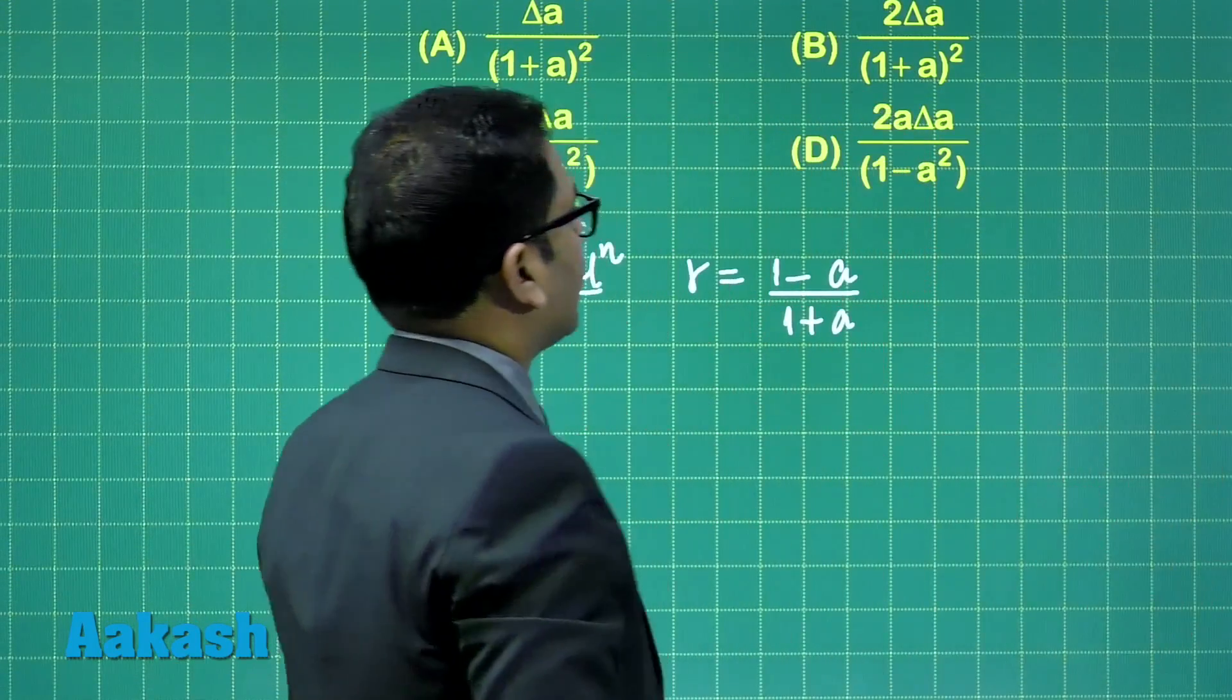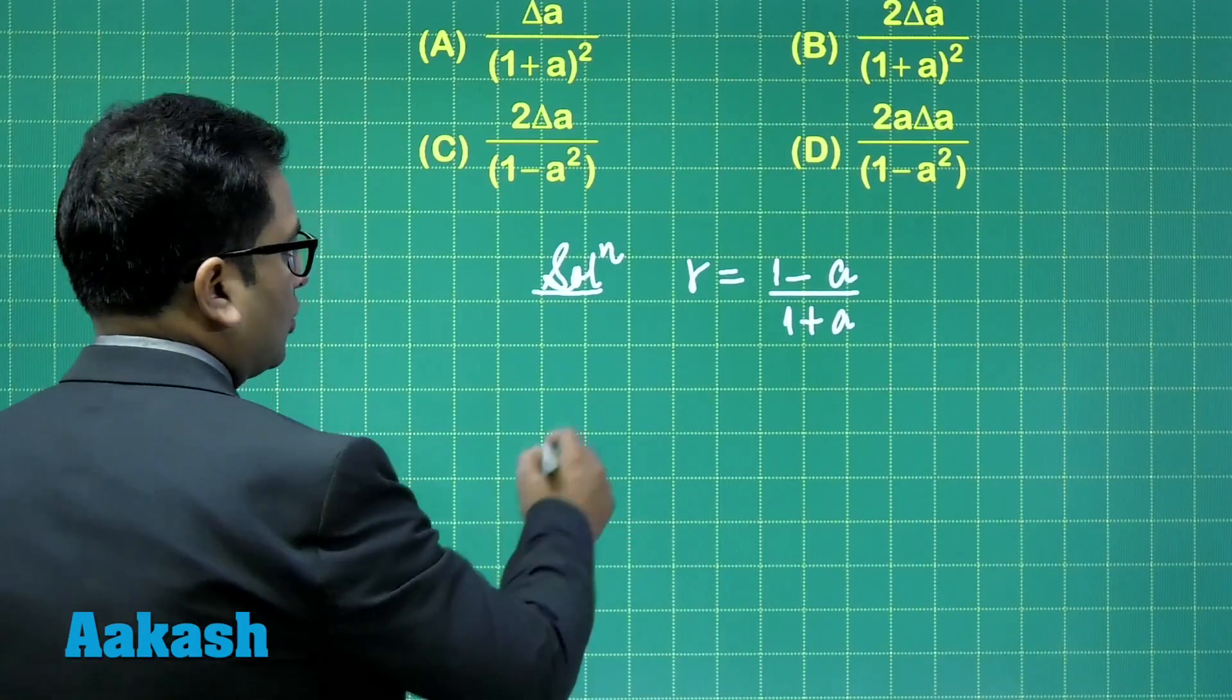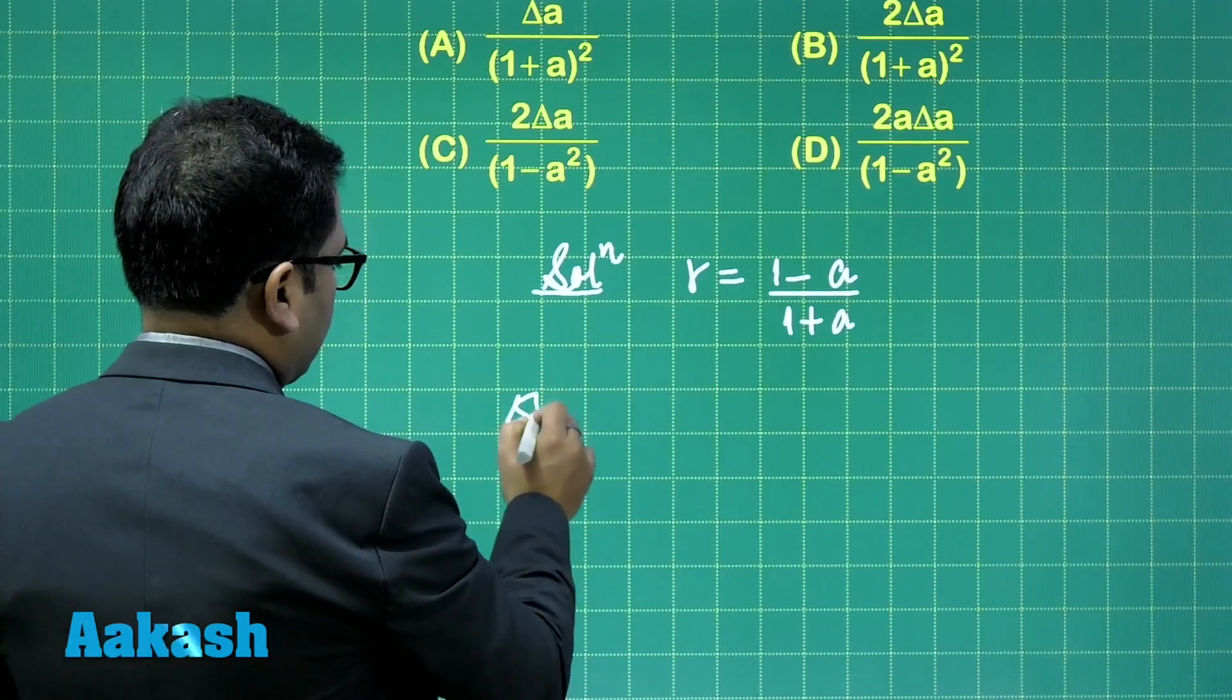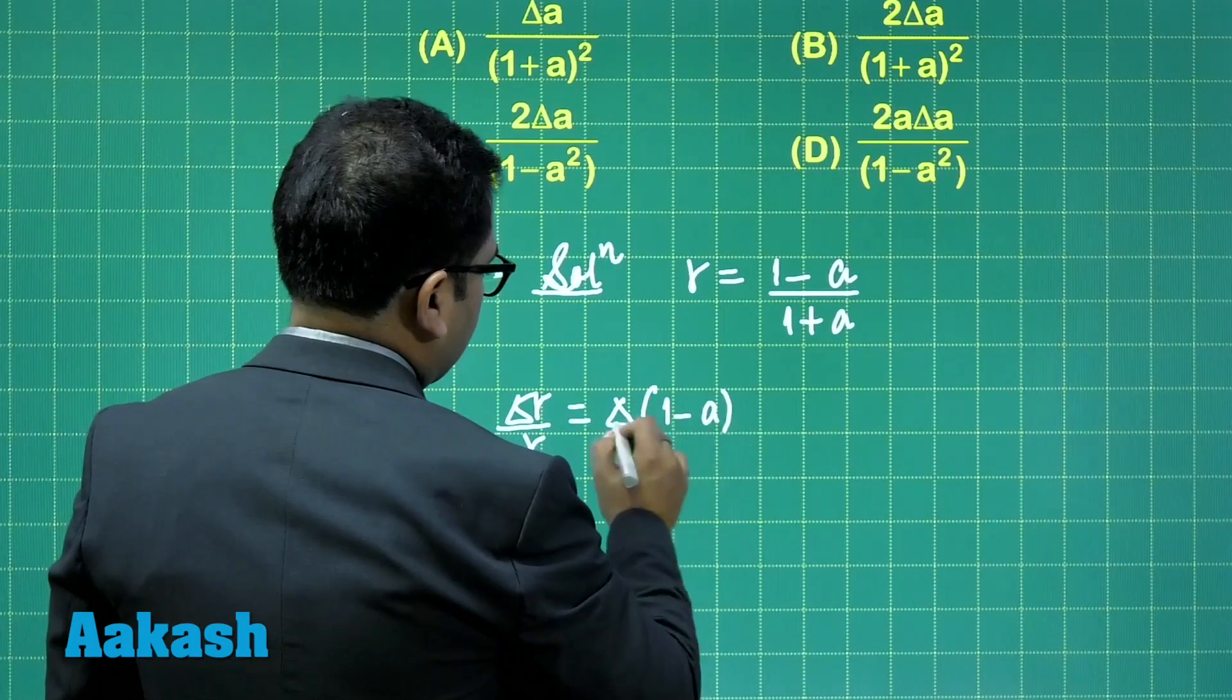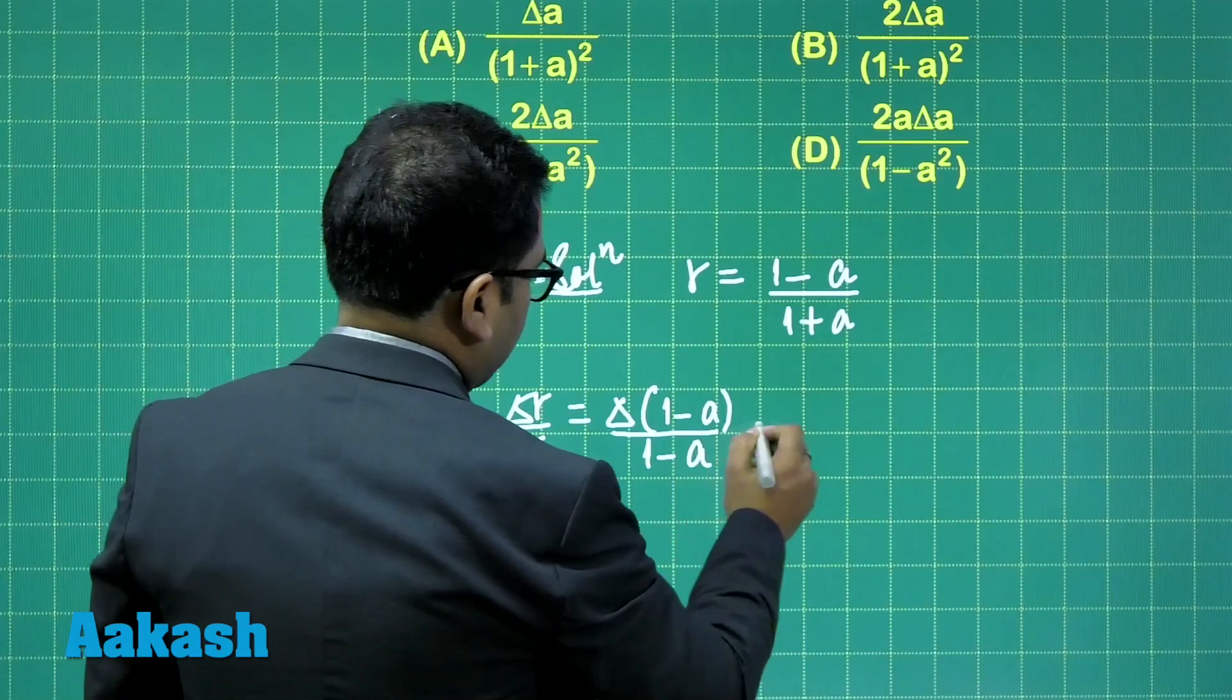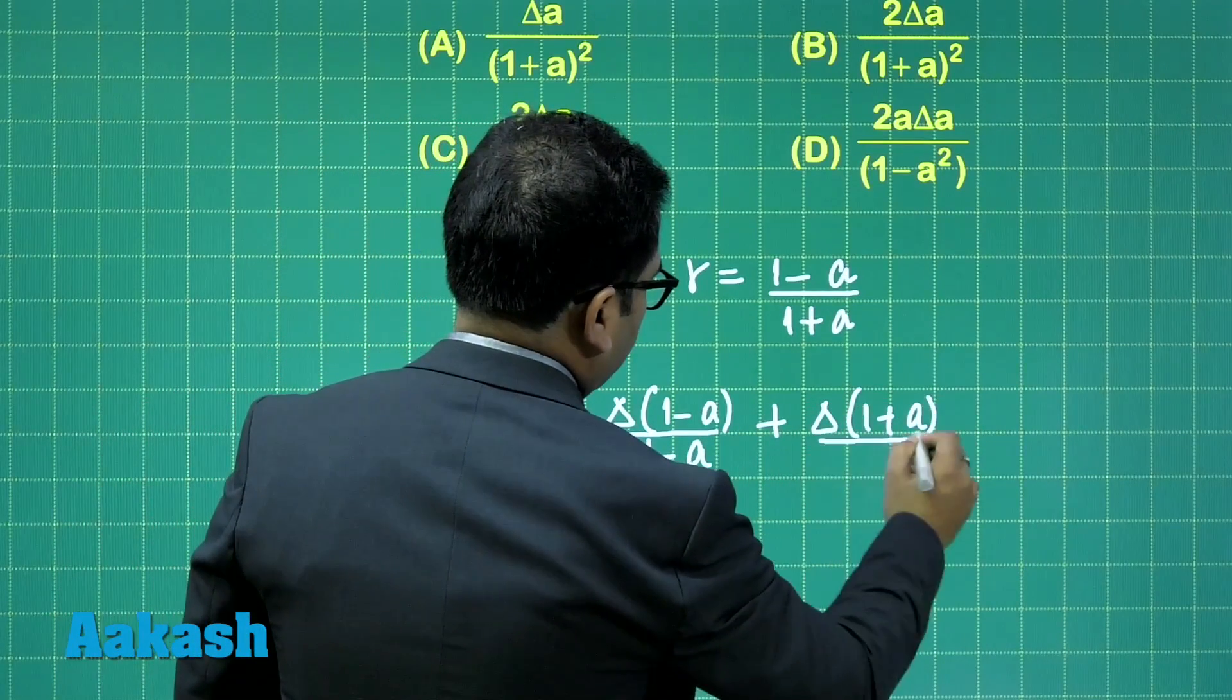And we need to calculate delta r. There are so many different ways how I can go, or straight away, you see. Delta r by r is delta(1 minus e) by (1 minus e) plus delta(1 plus e) by (1 plus e).